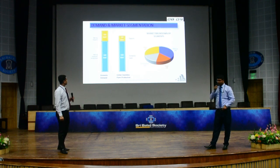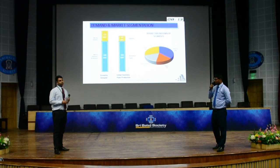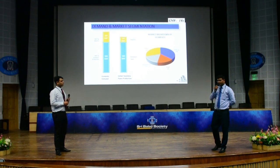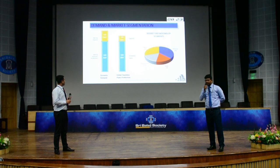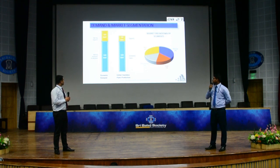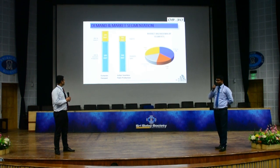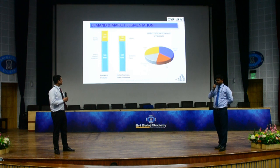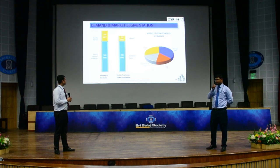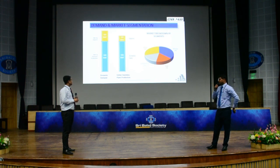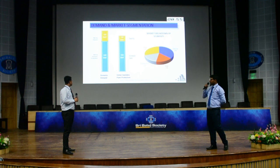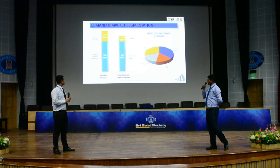On demand and market segmentation: the domestic demand of the seamless pipes industry is 800,000 metric tons, of which 500,000 metric tons is met by domestic production and 300,000 metric tons is met by imports. The market breakdown of this demand is 37% from oil and gas, 16% from power, 17% from infrastructure, and 30% from other industries including petroleum, fertilizers, and petrochemical industries. The Indian seamless pipes industry produces a total of 500,000 metric tons, of which 100,000 metric tons are exported.